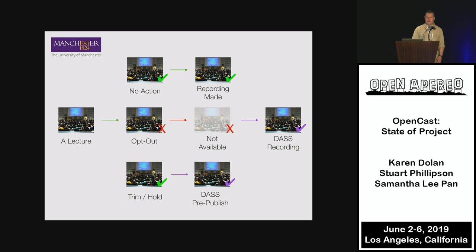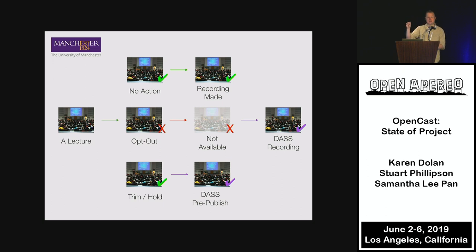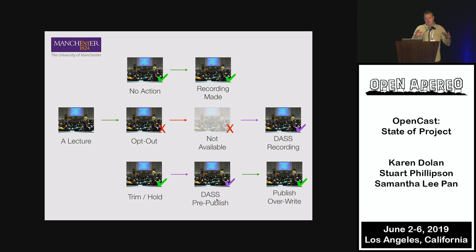Our workflow starts with a lecture. At Manchester, if you take no action you're recorded by default. The recording is then delivered to students. You can also decline to be recorded — but if we detect a disabled student is in the class, we'll make a recording automatically for that group. Opencast runs that logic: figuring out which students are disabled, what classes they're in, how to make recordings, and managing ACLs so it's only available to specific users. While a video is waiting to be edited, it's pre-published to disabled students, and when finally edited, the published version is written over.